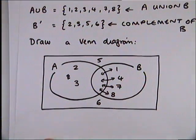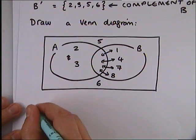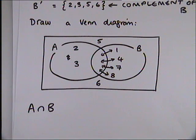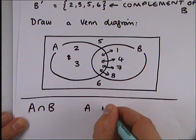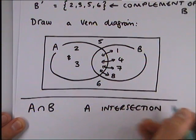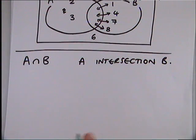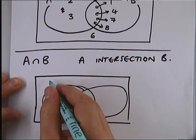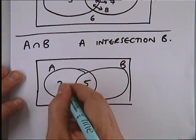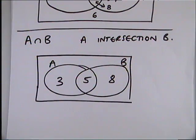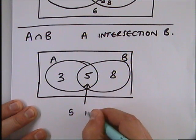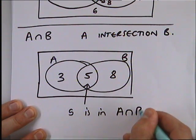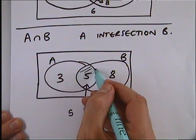There is one more bit of notation that you may need, which comes up quite often — A intersection B. Very much like travelling in America where two roads cross over — in the UK we call it a crossroads, in America they call it an intersection. It's where two things cross over. So looking at this Venn diagram, we could say that 5 is in the intersection of A and B — the intersection is the middle bit.